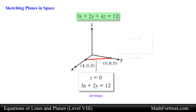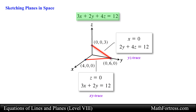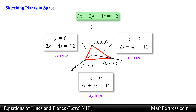We can then draw this line on the xy plane by plotting the x-intercept and the y-intercept and connecting them. We can then let x equal 0 and draw the yz trace by connecting the y-intercept and z-intercept. Finally we can let y equal 0 and draw the xz trace by connecting the z-intercept and x-intercept. In the end we end up with a plane in the shape of a triangle, but keep in mind that this plane extends infinitely across space.